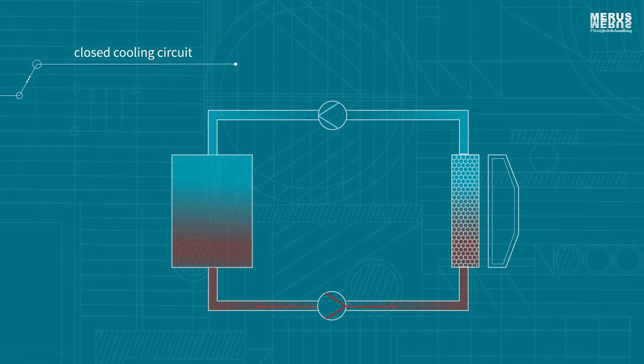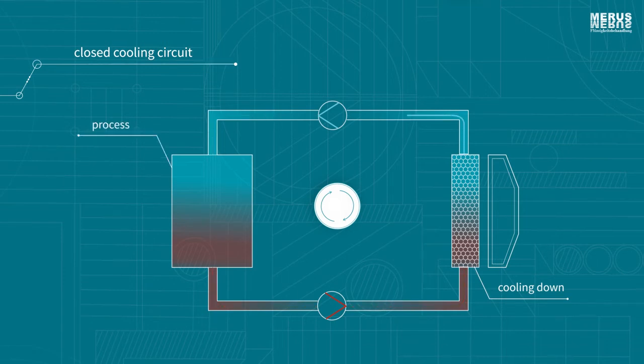In the closed cooling circuit the coolant is used multiple times. It is constantly alternating between cooling down in a refrigerating machine or heat exchanger and heating up.